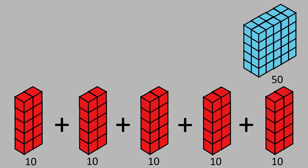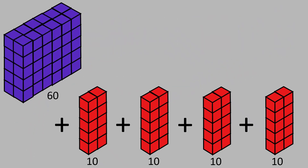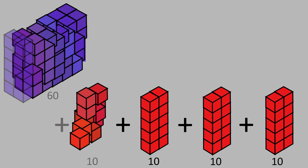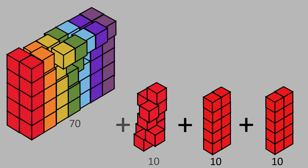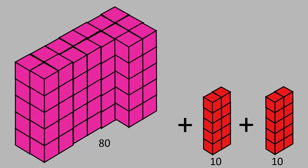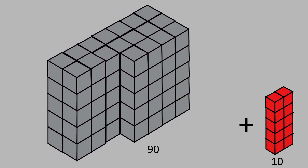50 plus 10 is equal to 60. 60 plus 10 is equal to 70. 70 plus 10 is equal to 80. 80 plus 10 is equal to 90. 90 plus 10 is equal to 100.